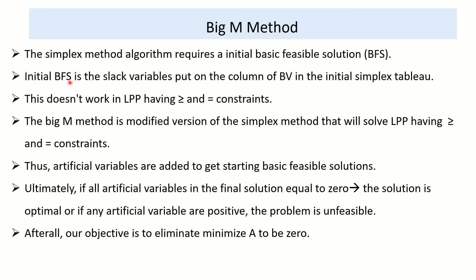As you remember, the initial basic feasible solution uses the slack variables. In the case of maximization, we put the slack variables as the initial basic feasible solution on the columns of the basic variables from the initial simplex tableau. But this doesn't work — starting with slack variables as the initial basic feasible solution doesn't work when there are greater-than-or-equal-to or equality constraints.